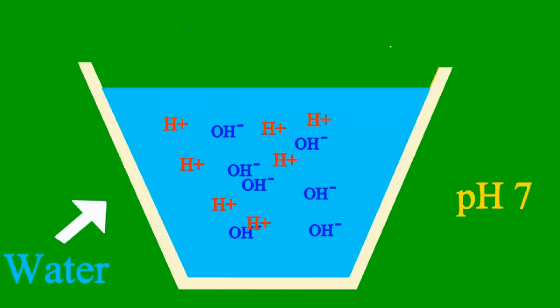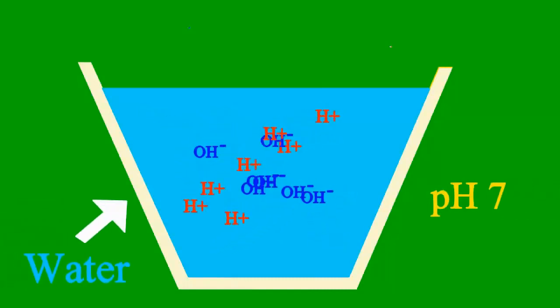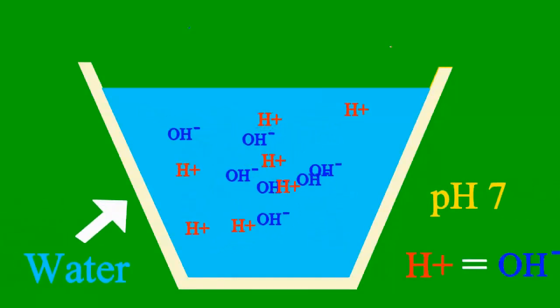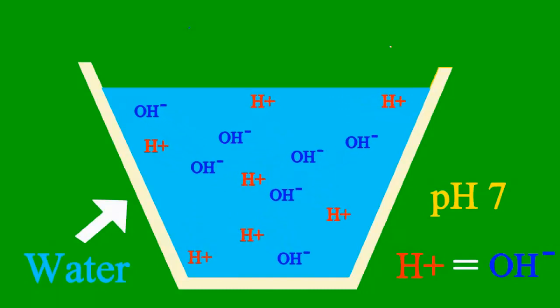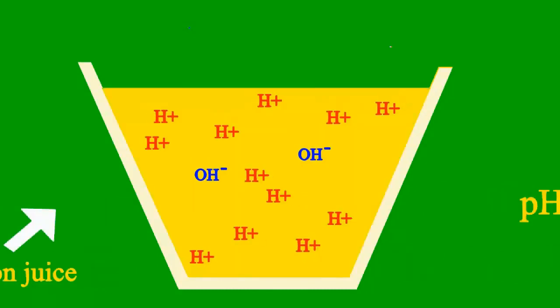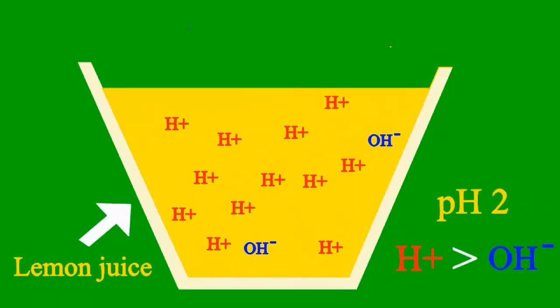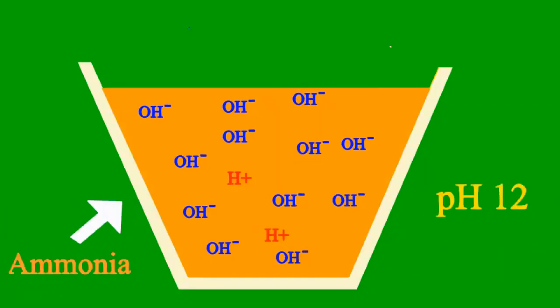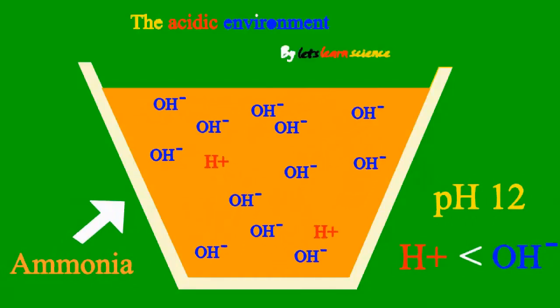When the pH is 7, it's a case where the sample is neither an acid nor a base. But less than 7, it's an acid. More than 7, it's a base all the way.